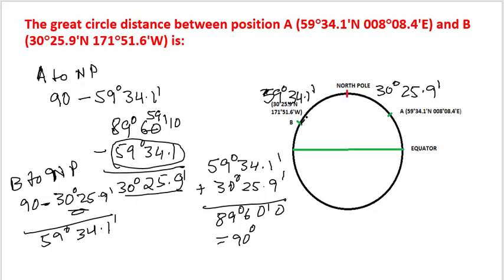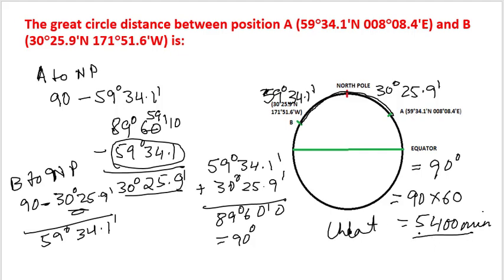The total travel from B to A is equal to 90 degrees, which equals 90 times 60 minutes, which is equal to 5,400 nautical miles. The total travel is 5,400 nautical miles which is our answer.